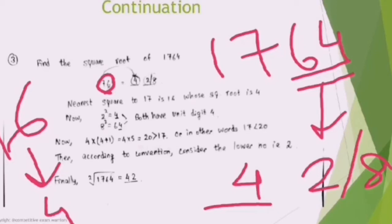For the next digit, 4 is 4 plus 1, that's 5. So 4 into 5 makes it 20. 20 is greater than 17, or you can say 17 is less than 20. According to convention, we need to take the lower number, that is 2.